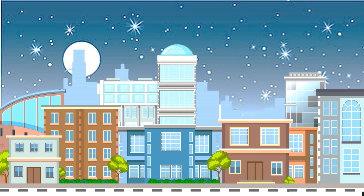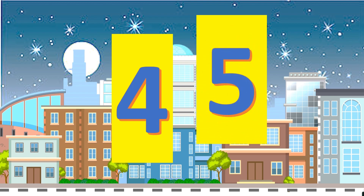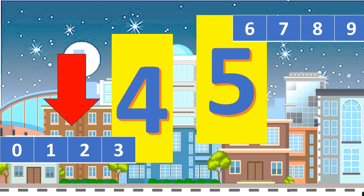When rounding numbers, 4 and 5 is the magic number. If the number is below 4 — such as 3, 2, 1, and 0 — we need to round down. But if the number is 5 or above — such as 6, 7, 8, and 9 — we need to round up.